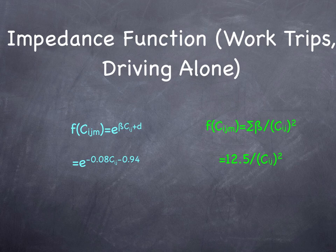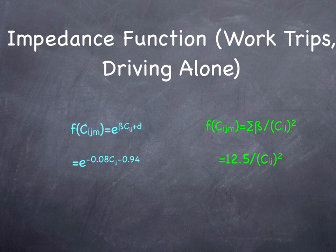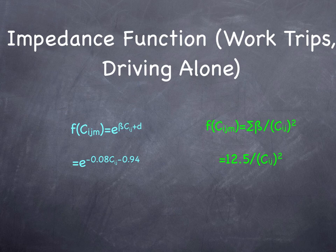This is an example of an impedance function I estimated a while ago for the Washington DC region. It is a negative exponential form. It is compared to a classic gravity model such that the area under the two curves is equal. They are both downward sloping, but they have somewhat different slopes.